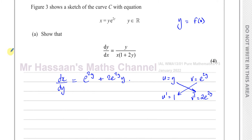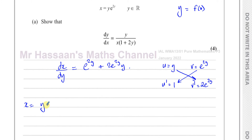This doesn't look like the answer we want. However, we can use a trick: since x equals y times e to the power of 2y, we can rearrange to get e to the power of 2y equals x over y. We substitute this in to eliminate e to the power of 2y from our expression.